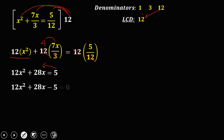Transpose 5 to the left side, so it becomes negative 5, equals 0. We now have a quadratic equation. To solve, we can use factoring or the quadratic formula. Using factoring: factors of 12x squared are 6x and 2x, and factors of negative 5 are negative 1 times 5, or negative 5 times 1.